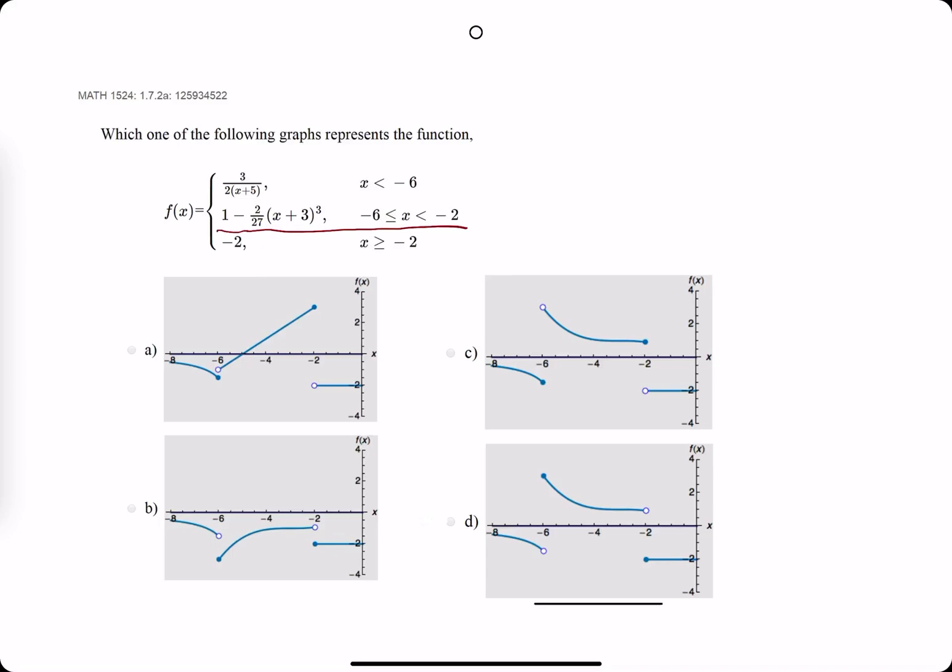The interval here is negative 6 to negative 2, specifically less than or equal to, and then just less than. What that means is the middle piece should have a closed dot, should have a function, and then have an open dot based on the less than or equal to and the less than.